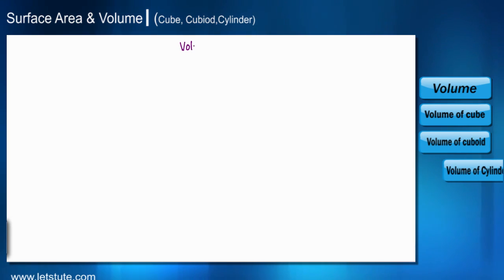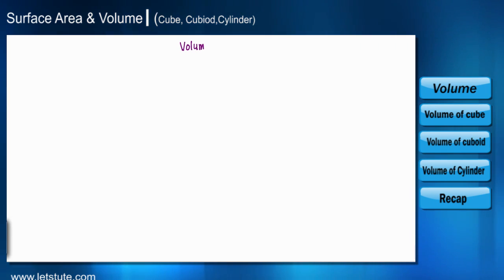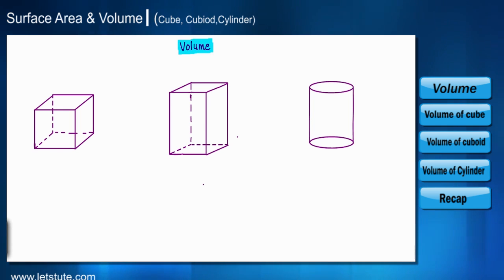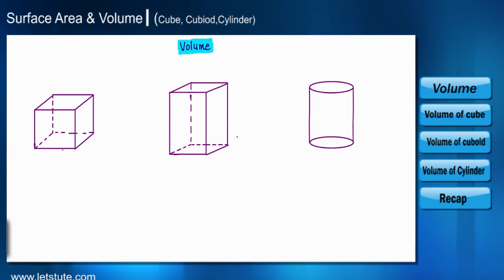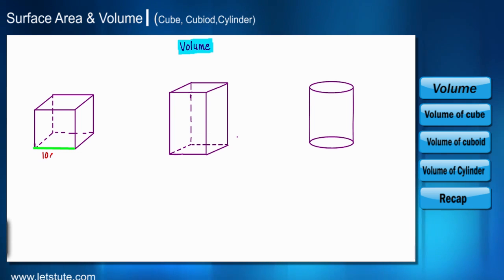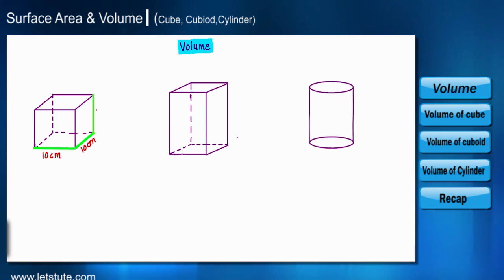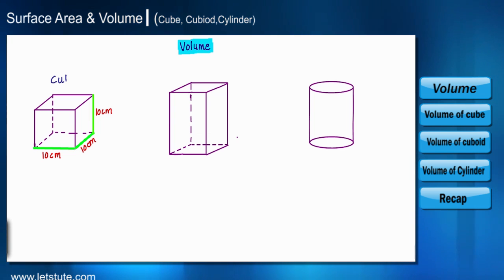In this session we will learn about volume. As you can see, we have three containers. The first container has a length of 10 centimeter, breadth of 10 centimeter, and height of 10 centimeter. Such a container is called a cube.